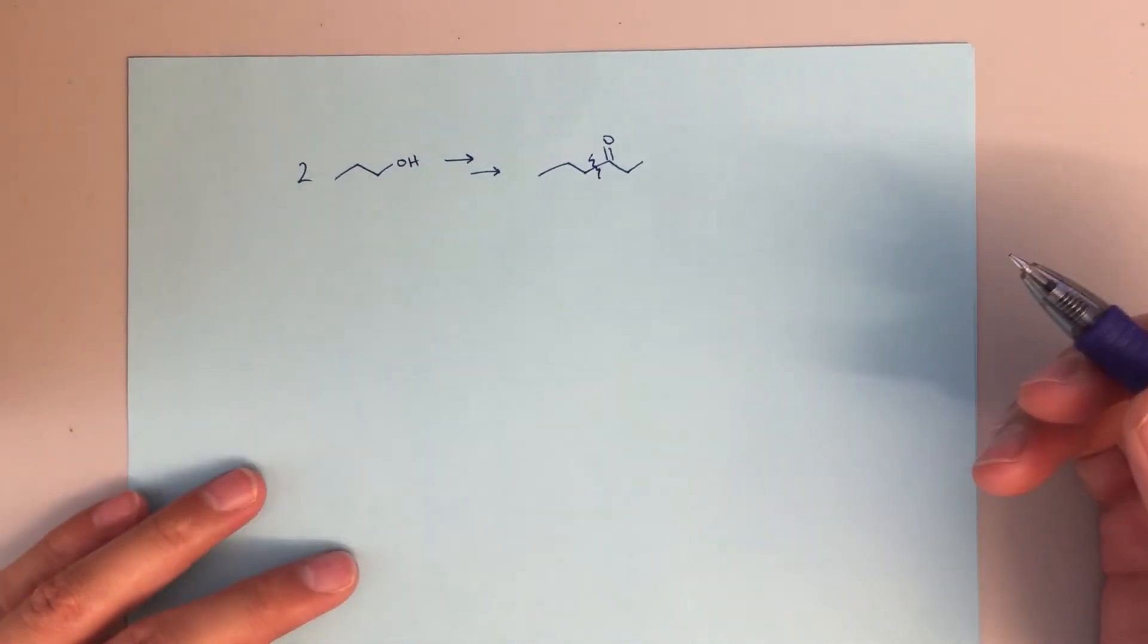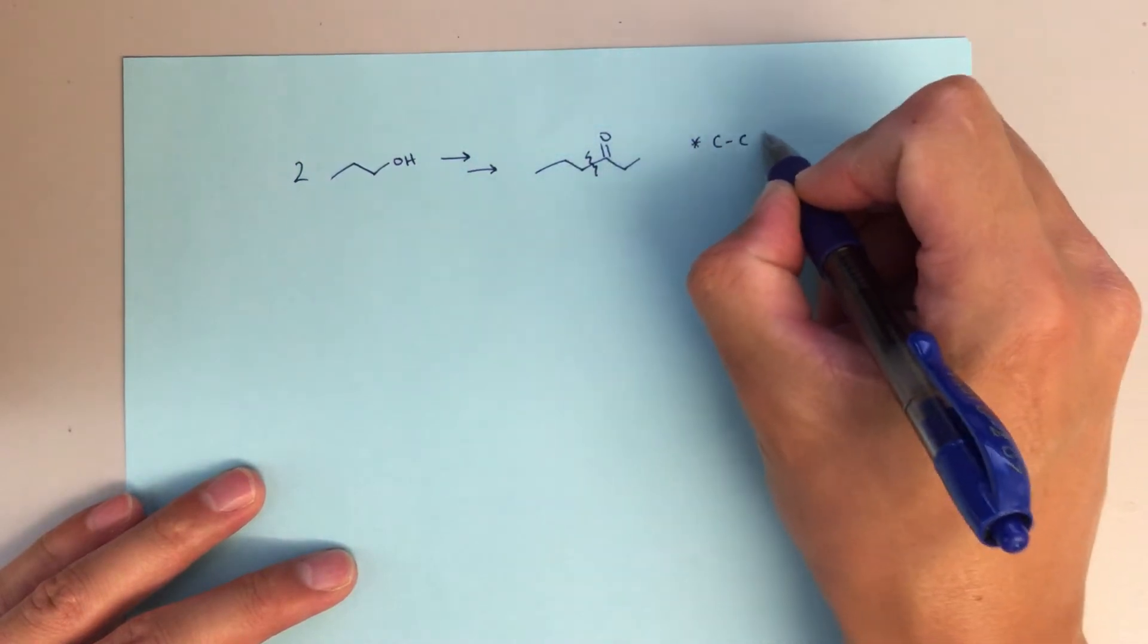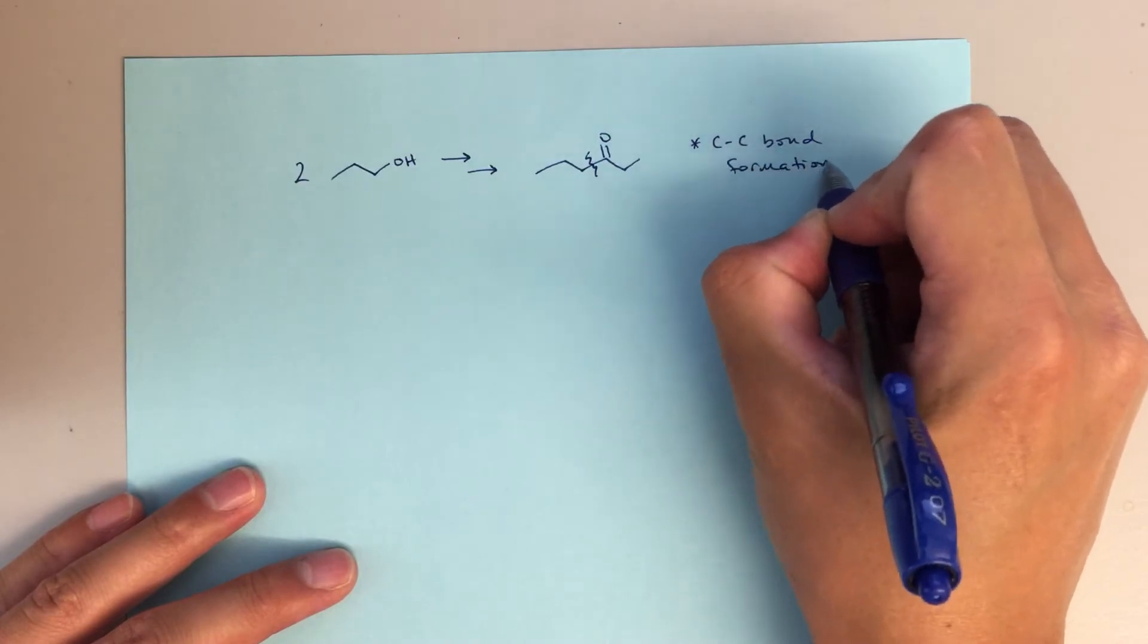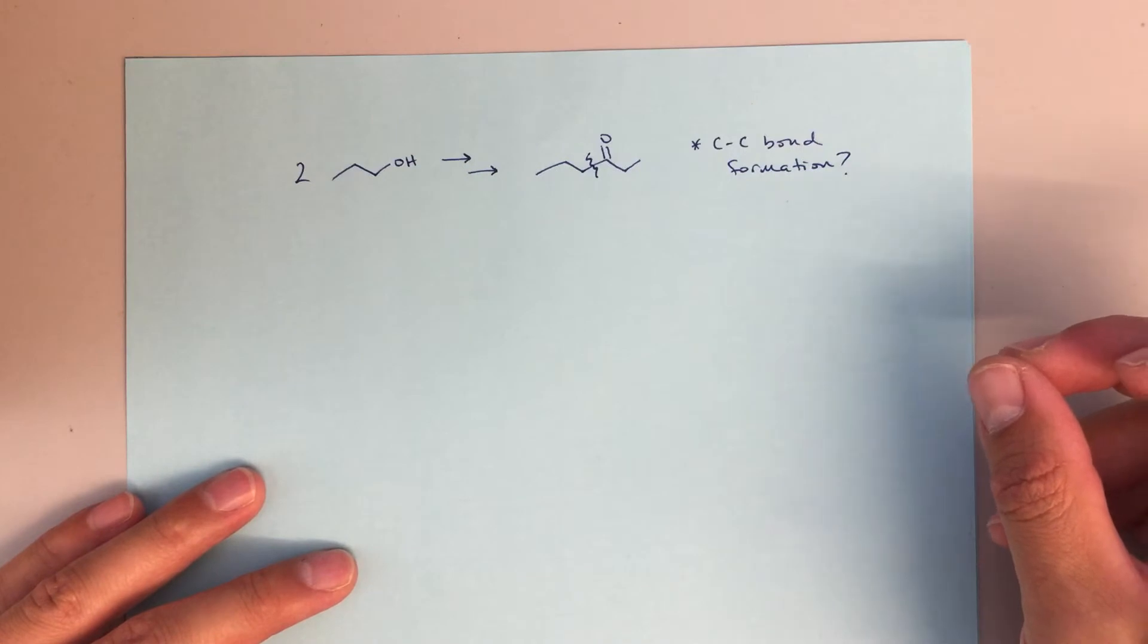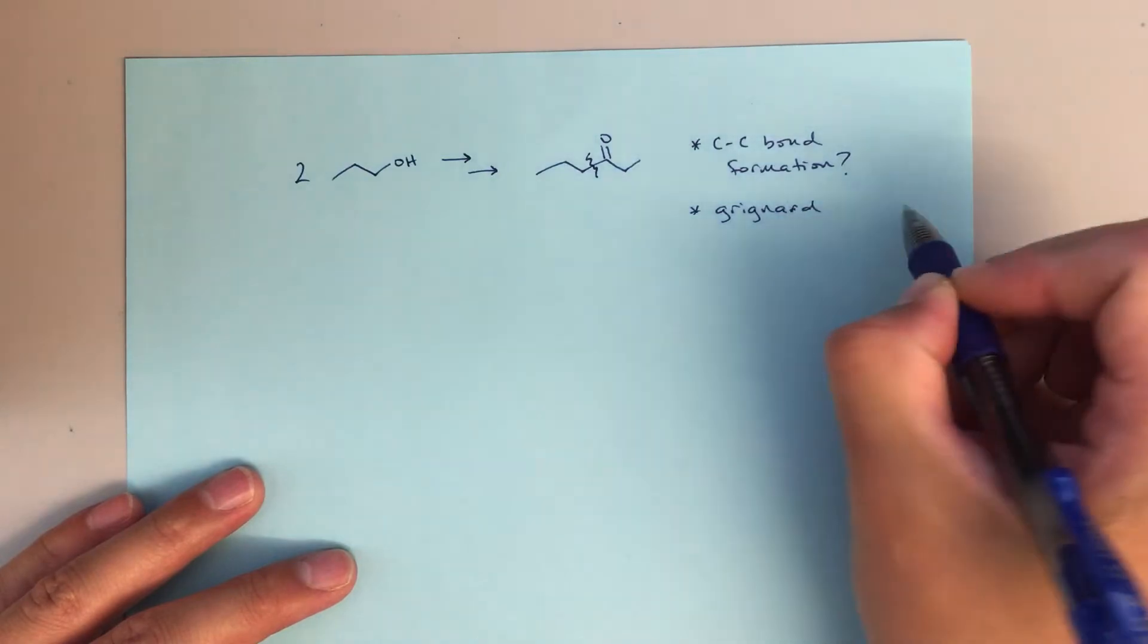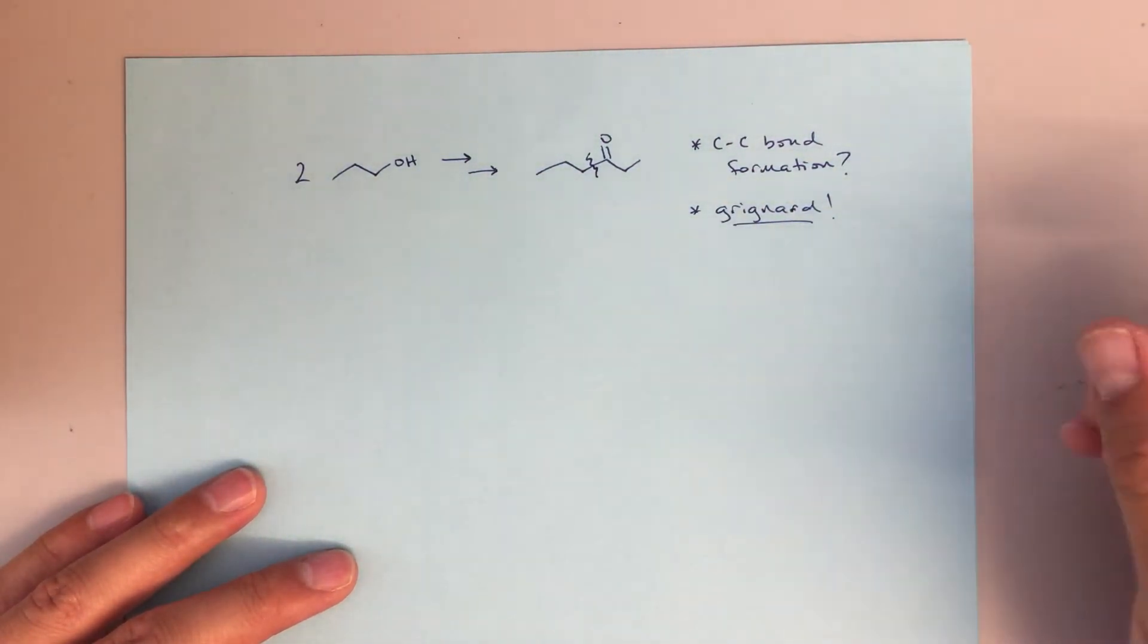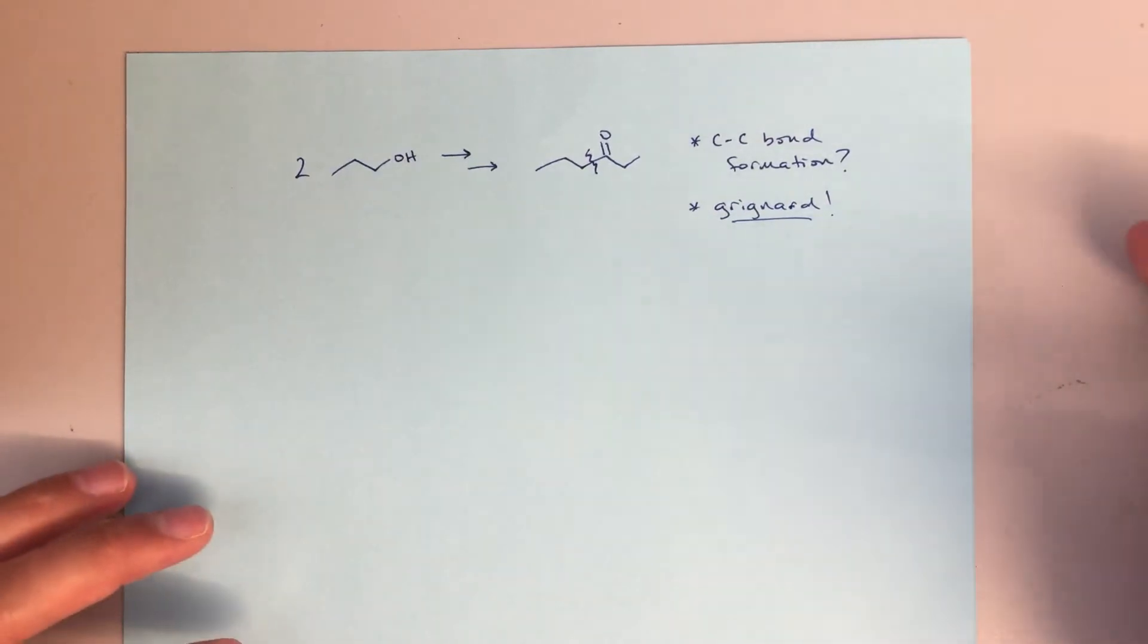So right away, the first thing I'm thinking about, the notes that I might write to myself: C-C bond formation. So we need to form a new carbon-carbon bond and right away I'm thinking Grignard. Recently we've been talking about Grignard reactions and that's going to be my way to form that new carbon-carbon bond. It's a really great synthetic tool that we have.